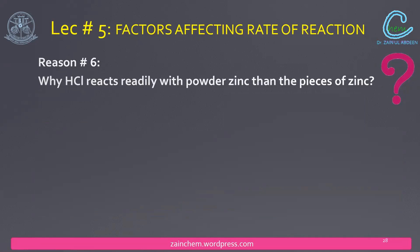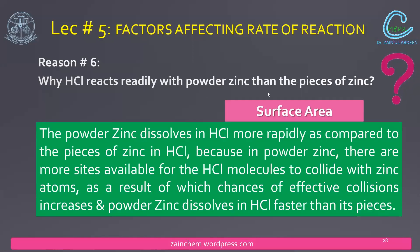Why does H2SO4 react more readily with powdered zinc than with pieces of zinc? The reaction with zinc powder is very fast, but with a piece of zinc it is slow. The reason is surface area: a piece of zinc has low surface area, but if you break it into powder, the surface area increases. With more surface area, more sites are available for collision, which increases effective collisions and the rate increases.